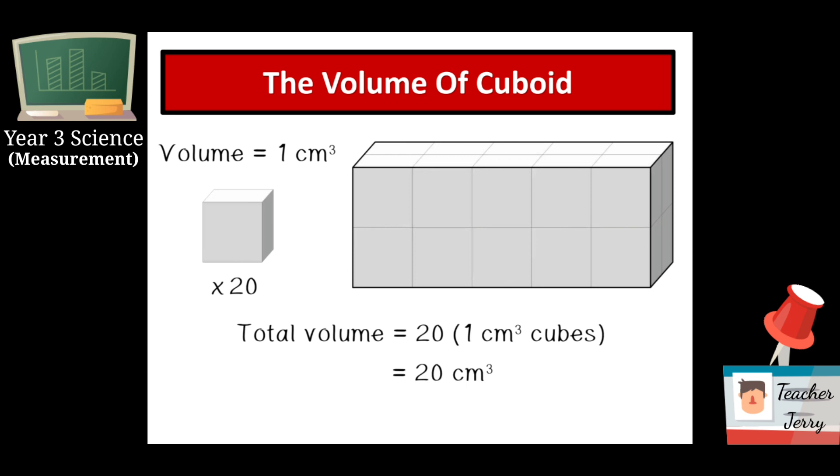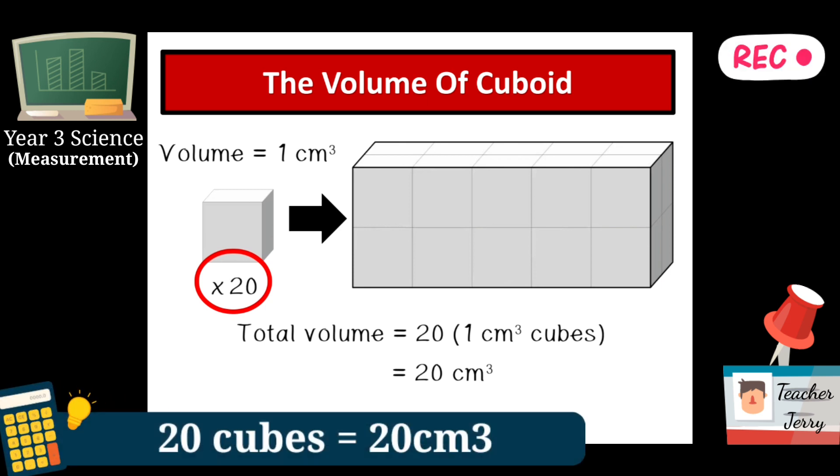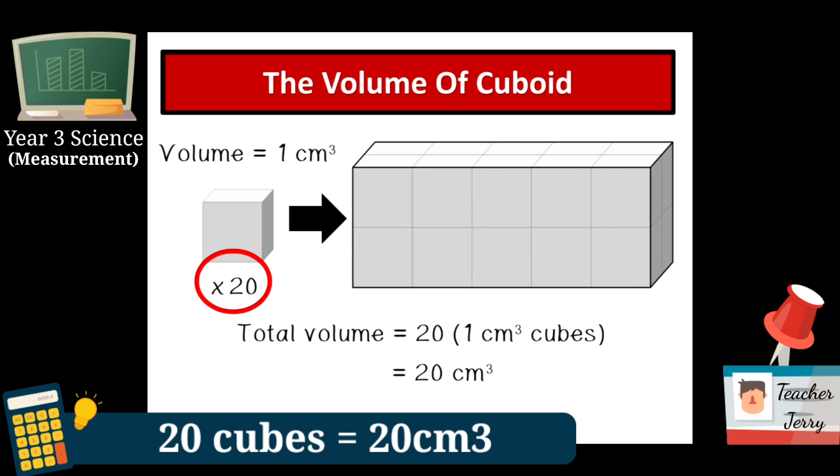So the total volume here, as we know, we already put inside twenty cubes, which means twenty one-centimeter cubes inside the cuboid. Maksudnya kita telah isikan dua puluh biji kubus dengan isi padu satu sentimeter padu ke dalam cuboid ini.